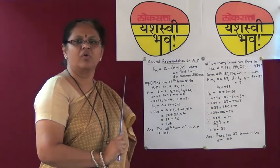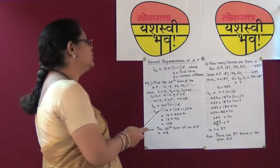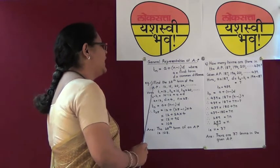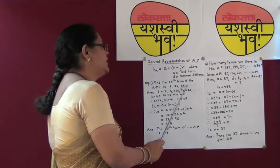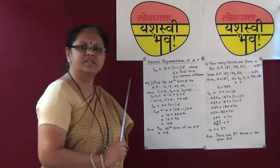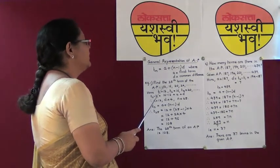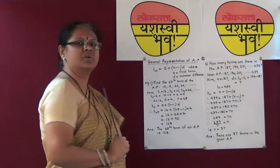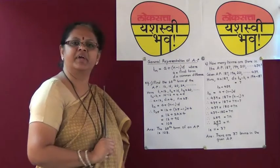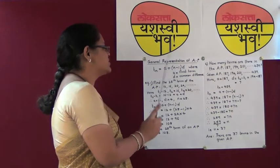Now let us go to the general representation of arithmetic progression. This is given by the formula Tn equals A plus (N minus 1) times D, where A is the first term and D is the common difference. Let us understand this formula by taking two examples. The first example: find the 25th term of the AP 12, 16, 20, 24 and so on.